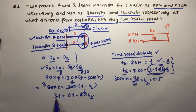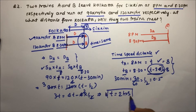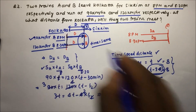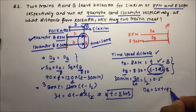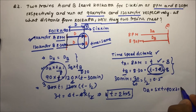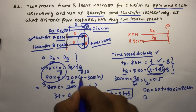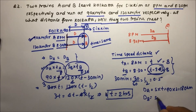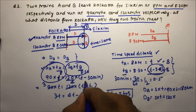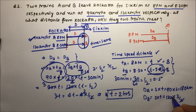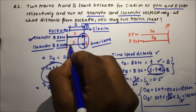So 4T − 3T = 2, meaning T = 2 hours. The distance covered by A is 90 × 2 = 180 km. Verifying with B: 120 × (2 − 1/2) = 120 × 3/2 = 180 km. Both trains cover the same 180 km, confirming they meet at 180 km from Kolkata. Thanks for watching the video.